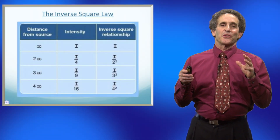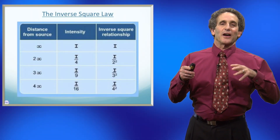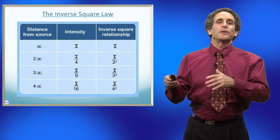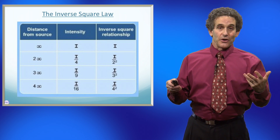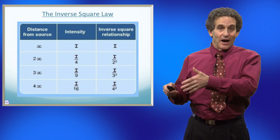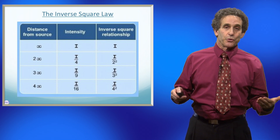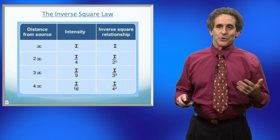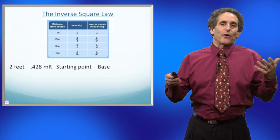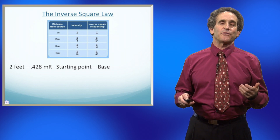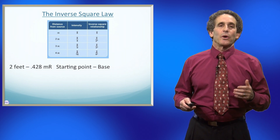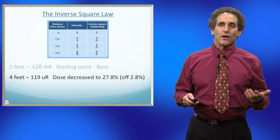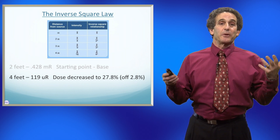We wanted to show you this chart to go over how it all works. When you double the distance, you're going to be at one fourth of the dose. When you triple the distance, it's going to be one ninth. And when you quadruple it, you're going to be one sixteenth. Here are the numbers we had in the room. At two feet — our starting point or base — it was 0.428 MR. When we doubled that to four feet, it dropped down to 119 micro R, which should have been a quarter.